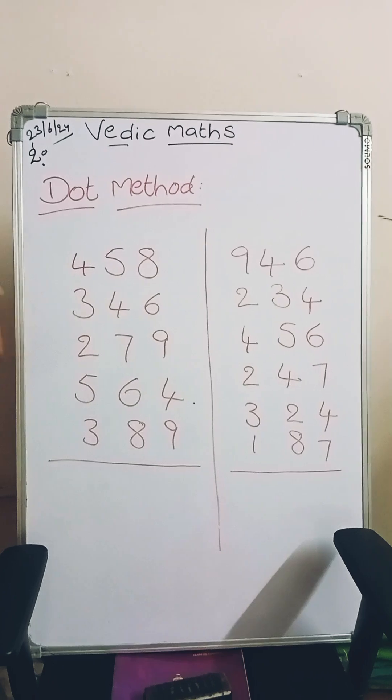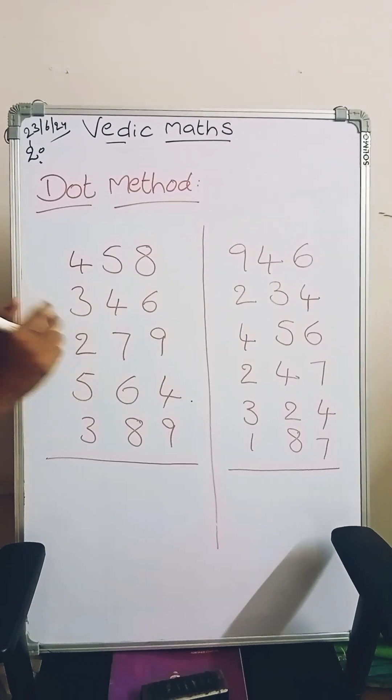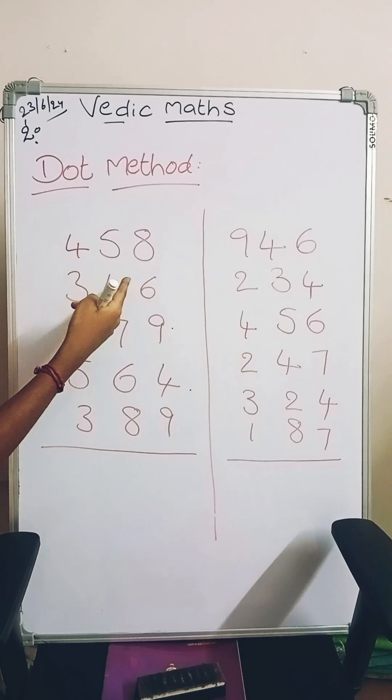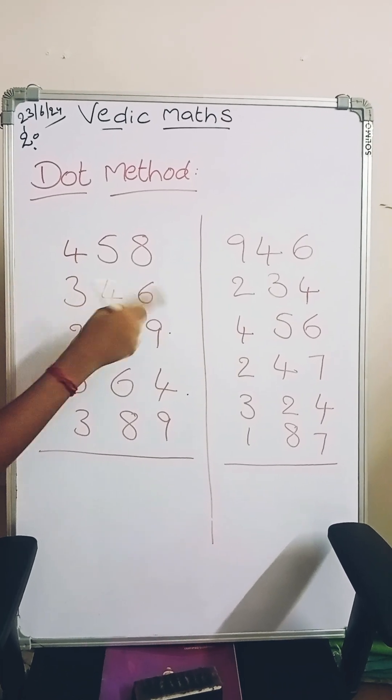And add the n number to this digit. 3 plus 9 is 12. 12 has 2 digits, so put a dot. And keep 2 in your mind. 2 plus 6 is 8. It's just 1 digit, so now you don't put a dot.